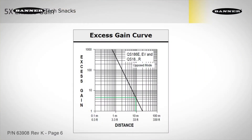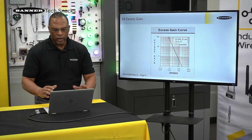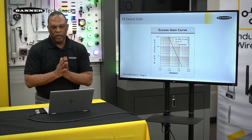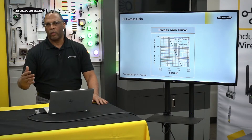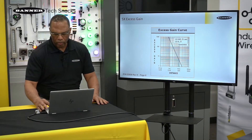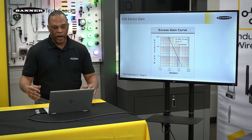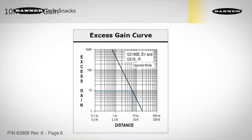Here's an example of how we would use this excess gain chart. Let's say we're in a factory and we know that dust is going to build up on the sensor. So even though this sensor can see out to 20 meters, we may not want to operate out that far. To have an excess gain of five, we really only want to be about 10 meters. Excess gain, as its name implies, is the amount of light over what is needed to turn on — only one is needed to turn on, but you don't always want to operate there. In a slightly dirtier application, you may want an excess gain of 10; the sensor can see out to 20 meters, but you may only want to be at six or seven meters to make sure you're seeing through the dust and debris. If you're in a very dirty environment and want to be at 50, you don't want to be any further than three meters back.